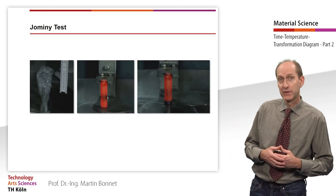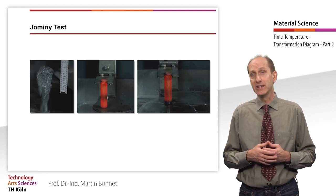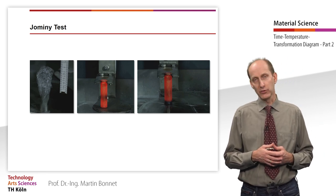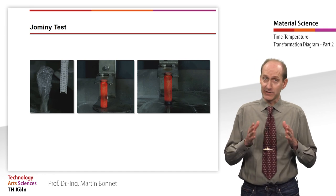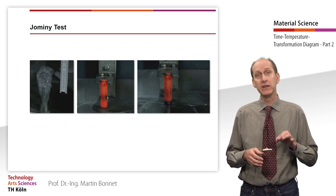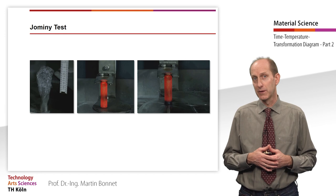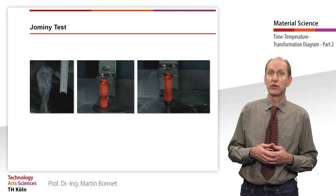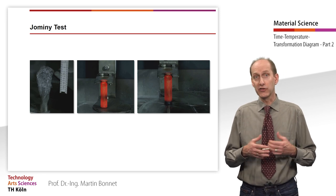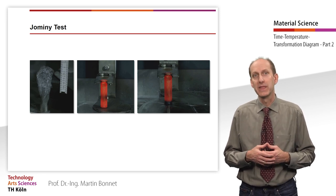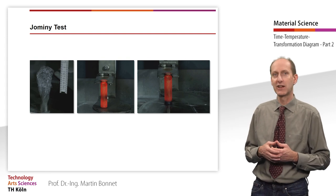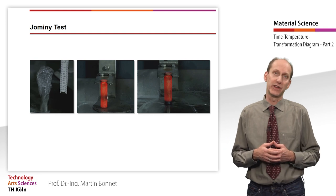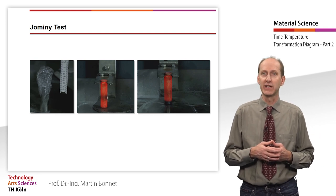The Jominy test serves to determine the hardenability of steels. Standardized round bar specimens are used for the test. The length is 100 mm and the diameter 25 mm. All heat treatments require heating the specimen at a controlled rate to the correct temperature and maintaining a certain holding time to achieve a homogeneous austenitic structure. This process is known as austenitization.